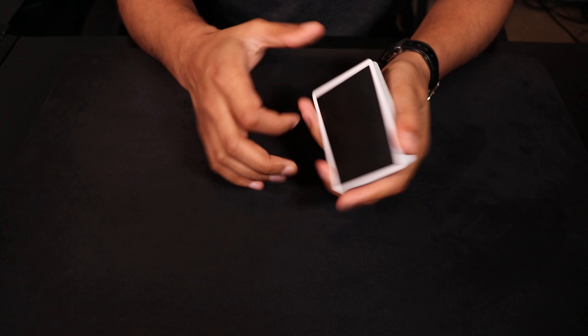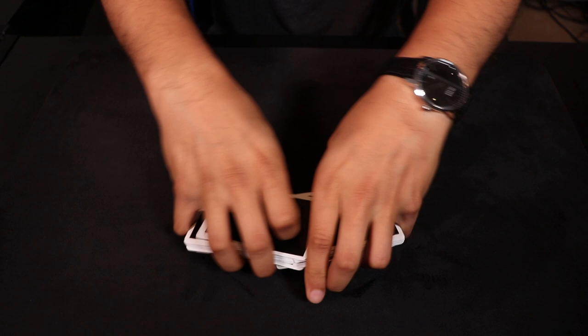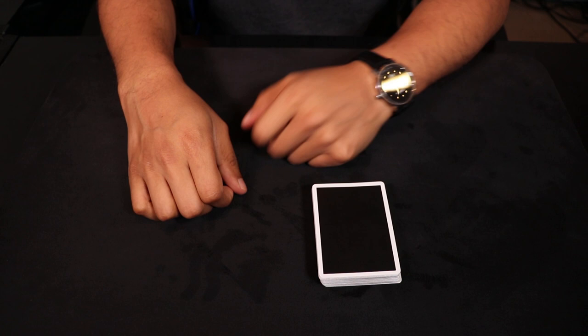And just to test out this ability, I'm going to hand this deck over to a spectator and I'm going to have the spectator give the deck a quick riffle shuffle. Okay, there we go. And we're good on that end.